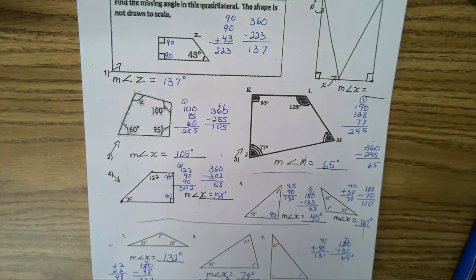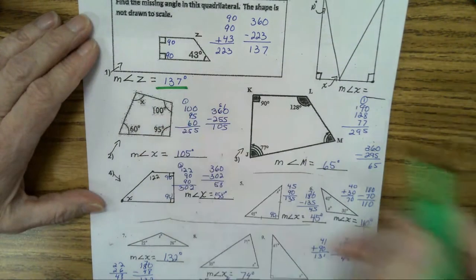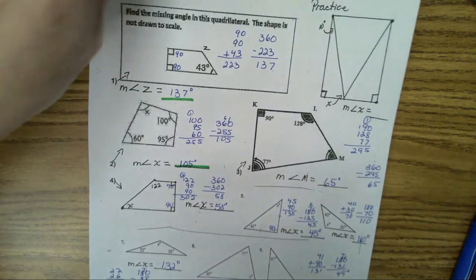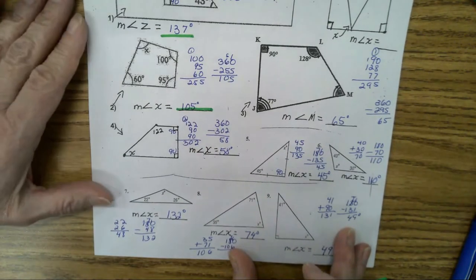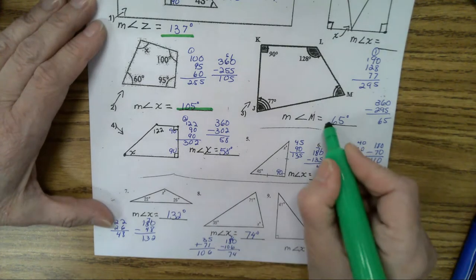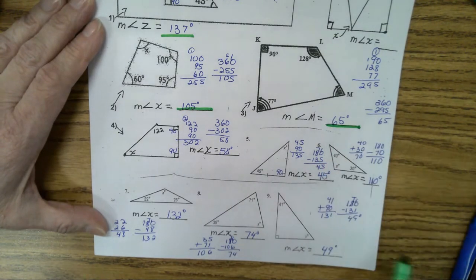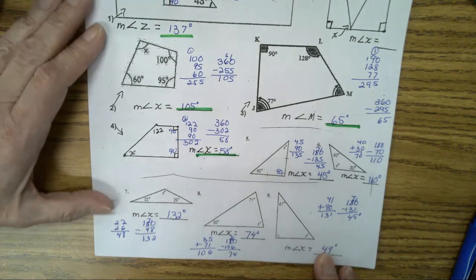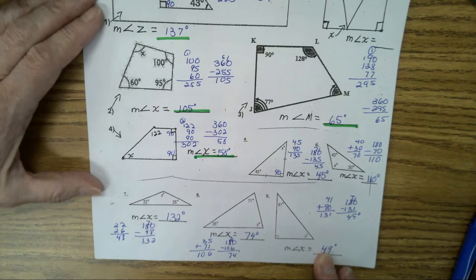Number one, 137 degrees. Number two, 105. Remember with quadrilaterals you add them together and subtract from 360. Number three is 65. Number four is 58 degrees. Any questions on those? Did everyone get the same answers as what I have?